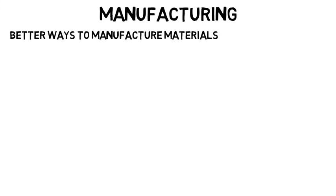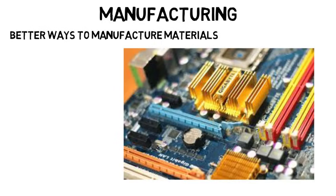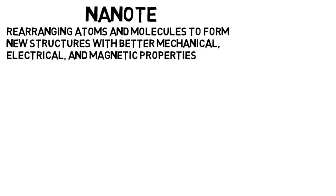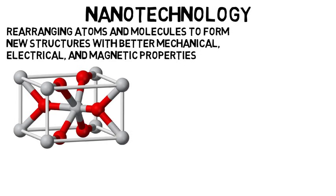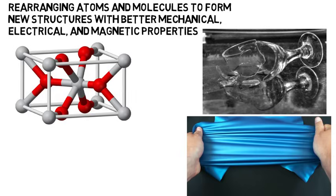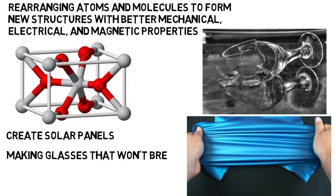Materials engineers can also work on materials processing and manufacturing. Materials engineering isn't just about analyzing properties of materials and how to use them, but also better ways to manufacture these materials, like with the fabrication of semiconductors used in our electronics. You could also work on the study of carefully rearranging atoms and molecules to form new structures with better mechanical, electrical, and magnetic properties — this is also known as nanotechnology. If we can manipulate the arrangement of atoms, we can change the object's properties and how it behaves. We can use this to create solar panels that absorb energy much better, all the way to making glasses that won't break when dropped. Materials engineers could make clothes that don't smell bad after use, tires that grip the road better, stronger tennis rackets, and the list goes on.